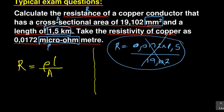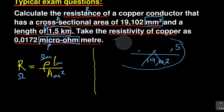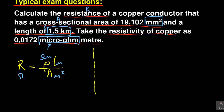You need to be very sensitive about the units. Remember: resistance is in ohms, resistivity is in ohm-meters, length is in meters, and area is in meters squared. This makes the problem more complex because you need to do unit conversions before substituting into the formula.